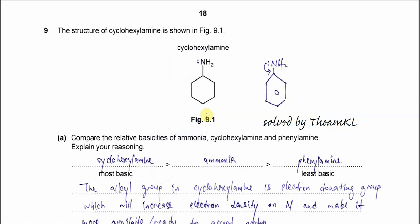Question 9. Figure 9.1 shows cyclohexylamine. This is a primary amine because the nitrogen is bonded to the cyclohexyl group, which is the alkyl group.